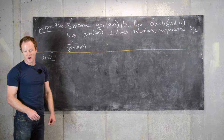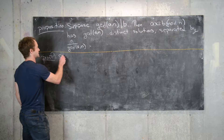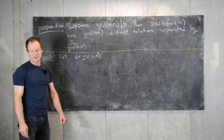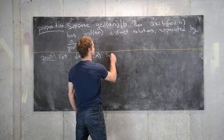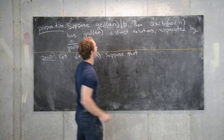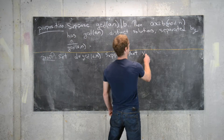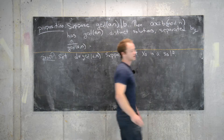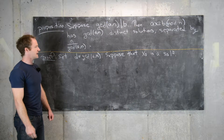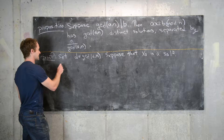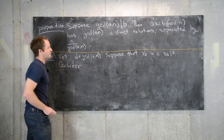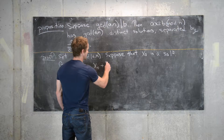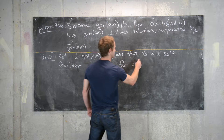Let's set D equal to the GCD of a and n, just for ease of notation. And let's also suppose that x₀ is a solution to the linear congruence. Now let's consider the number x₀ + (n/d)·k for k in the integers.